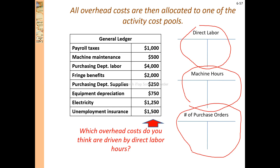Payroll tax is already driven by direct labor. Unemployment insurance is paid because we have a direct labor workforce — these fringe benefit costs are all driven by direct labor hours.